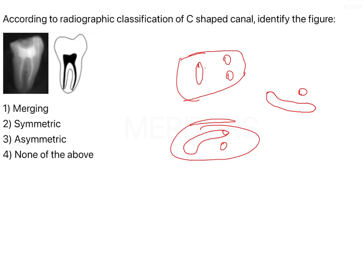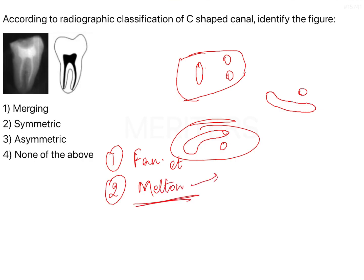Two people worked extensively on understanding C-shaped canals: Fan et al. and Melton. Melton was the first person who described C-shaped canals and gave a classification — type 1, type 2, and type 3. Fan et al. later added two more types: type 4 and type 5.